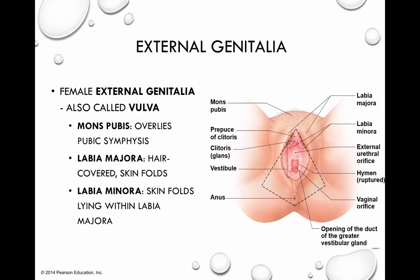All of that would be considered internal genitalia. Now we'll talk about external genitalia — in regards to female external genitalia, we also refer to this as the vulva. All of these structures are components of the vulva. First and foremost, we start with the mons pubis, the fatty area that overlies the pubic symphysis. Its purpose is to create protection and cushioning for that area — it's subcutaneous tissue designed to absorb impact. From there, we have skin folds called the labia majora, which are hair-covered folds.